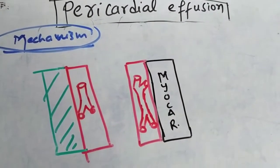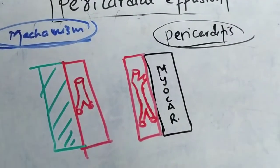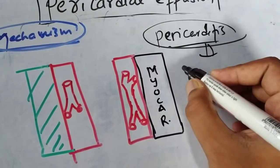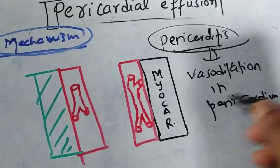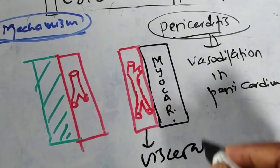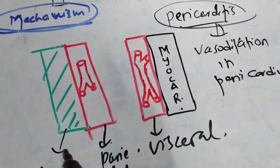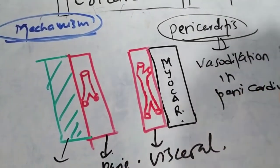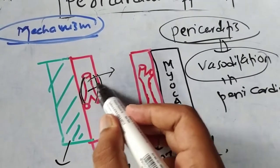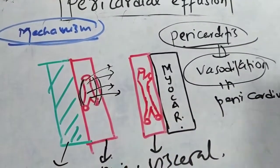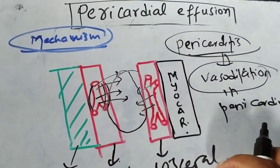Now let's talk about the mechanism of pericardial effusion development. If a person has pericarditis, there is inflammation of the pericardium. This causes inflammatory mediators to produce vasodilation and capillary dilation in the pericardium. Blood vessels are present in the visceral and parietal layers, and when they dilate, plasma is extravasated from the capillaries into the pericardial space, increasing the fluid volume. This is the main mechanism by which effusion develops.